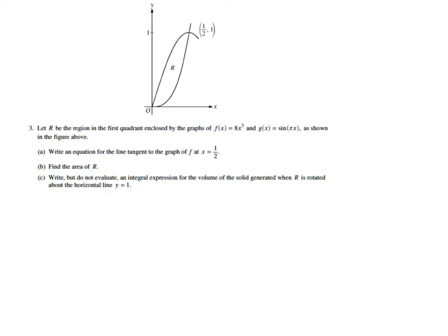In this question they say let R be the region in the first quadrant enclosed by the graphs f(x) = 8x³ and g(x) = sin(πx) as shown in the figure above. It's good for us to notice that the one on the bottom here is F, and the one on the top is G. That's not really a big deal for part A because they gave us the equations, but for B and C that will make a difference.